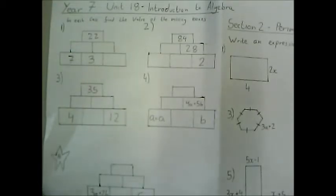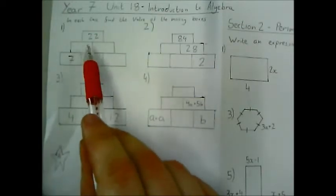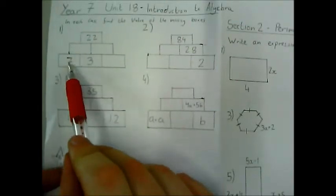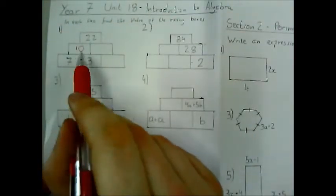Let's look at part one first. OK, so the number pyramids work by adding numbers below to get the box above. So 7 plus 3 is 10.